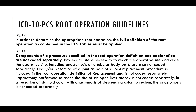Guideline B3.1b: Components of a procedure specified in the root operation definition and explanation are not coded separately. For example, procedural steps necessary to reach the operative site and close the operative site, including anastomosis of a tubular body part, are also not coded separately. We'll learn more about this specifically when we talk about reading through the operative narrative in Module 3.